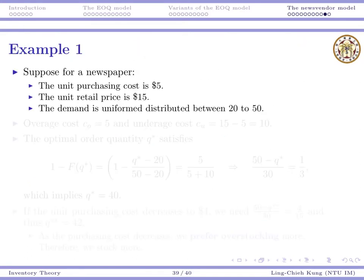Let's try to solve some numerical examples. Suppose for a newspaper: the unit purchasing cost is $5, the unit retail price is $15, and the demand is uniformly distributed between 20 to 50. Now we can use our formula to say the overage cost now is $5 and the underage cost is $10. For each unit of leftover, we paid $5 but that does not create any value to us.